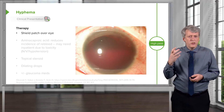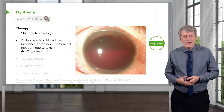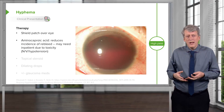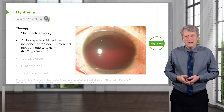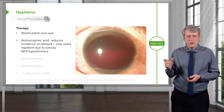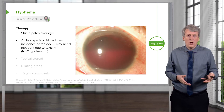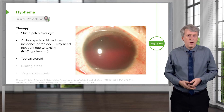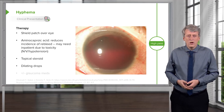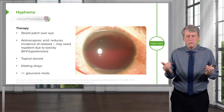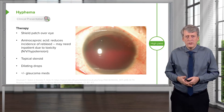Treatment includes placing a shield patch over the eye. Aminocaproic acid can reduce the incidence of re-bleed, though it may require inpatient management due to drug toxicity causing nausea, vomiting, or hypotension. Ophthalmologists may also recommend a topical steroid and dilating drops, and glaucoma medications may or may not be required depending on how the blood is interfering with drainage from the anterior chamber.